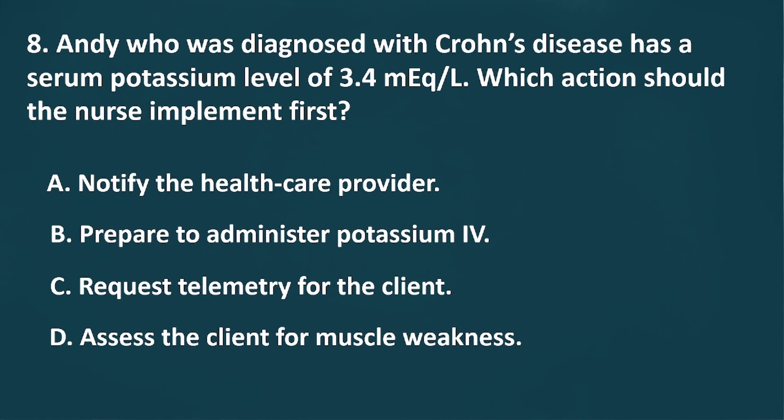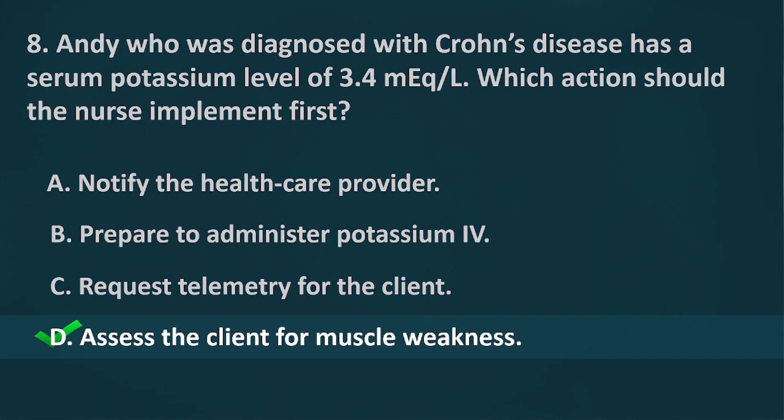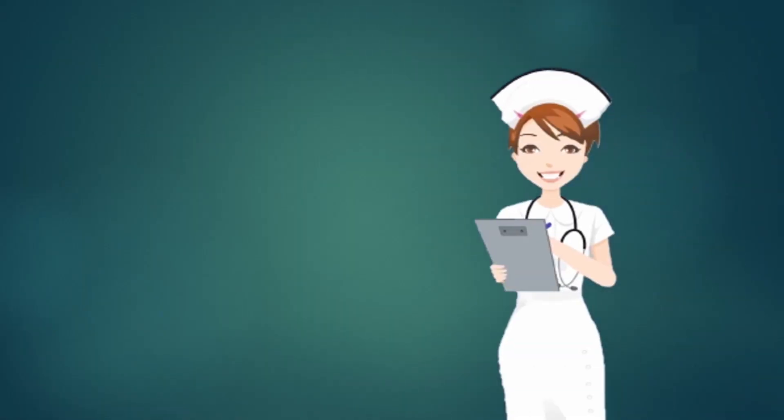The correct answer is Letter D, assess the client for muscle weakness. In most cases, questions that ask what to do first should focus on assessing before taking further action. The normal level of serum potassium is 3.5 to 5.5 milliequivalents per liter. Muscle weakness may be a sign of hypokalemia, which can lead to cardiac dysrhythmias.